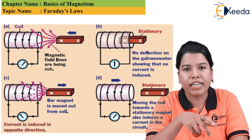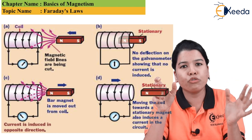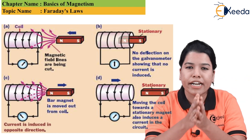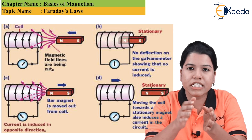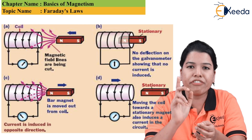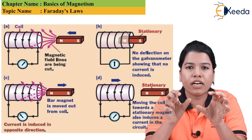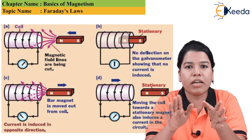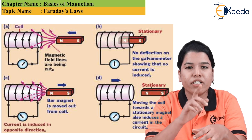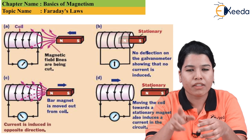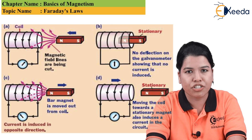Now, in figure D, if the magnet is kept constant and the coil is moved towards the magnet, then the galvanometer shows some amount of deflection. Looking at all these figures, in figure A both the magnet and the coil were in a constant position — neither of them was moving — but in the rest of the figures, that is figures B, C, and D, either the coil or the magnet is moving and one of them is stationary.